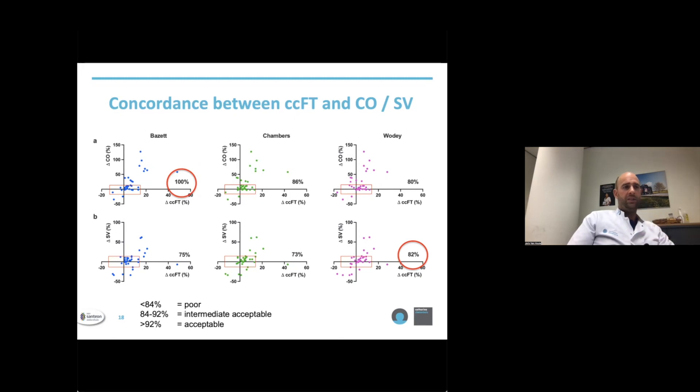Concordance between CCFT and stroke volume, as can be seen in the lower rank, was poor for all equations, with a maximum of 82% for Wodey's equation. These concordance plots were constructed with exclusion zones of 15% to eliminate low predictive data that lie near the center of the plot.